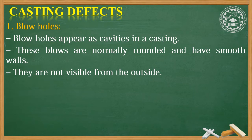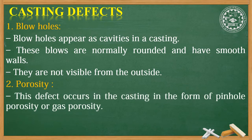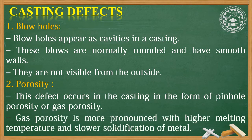The second defect is porosity. These defects occur in the casting in the form of pinhole porosity or gas porosity. When gas comes out, it forms a pinhole, which is a porosity. Gas porosity is more pronounced where higher melting temperature and slower solidification of metal is observed.